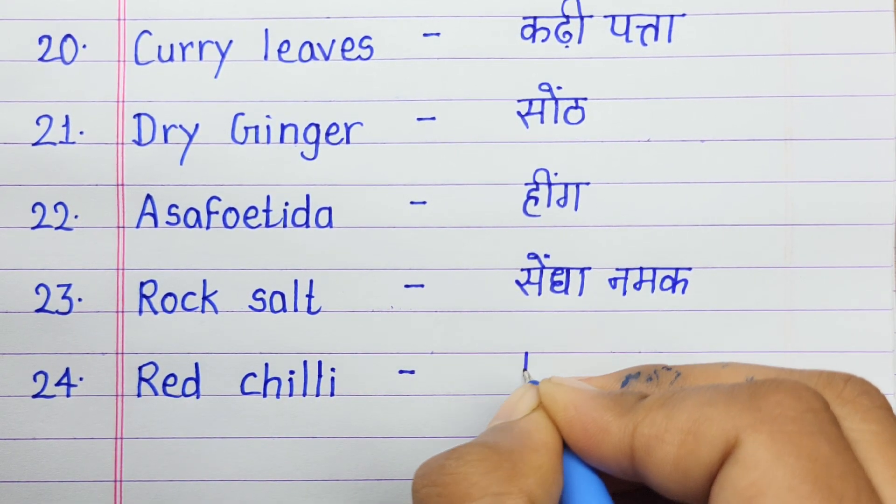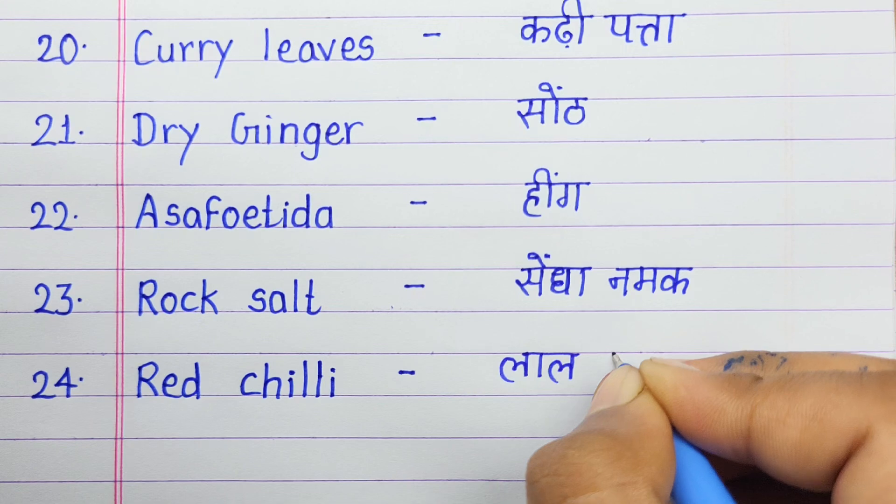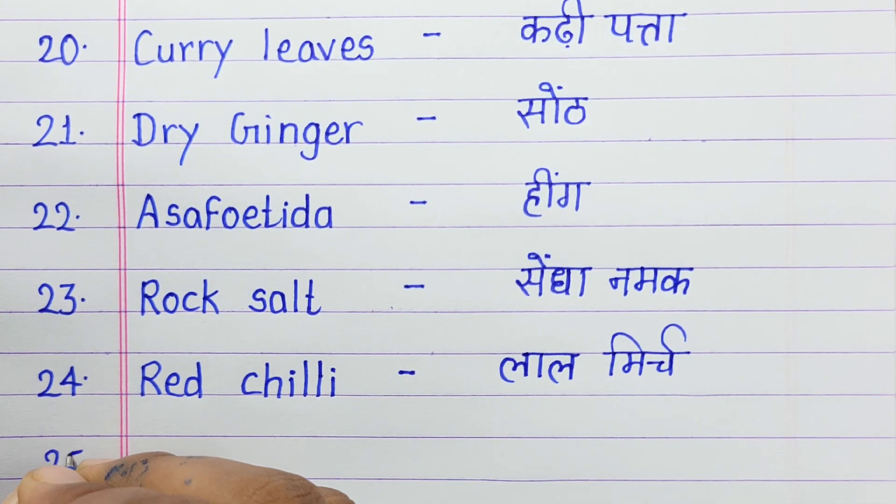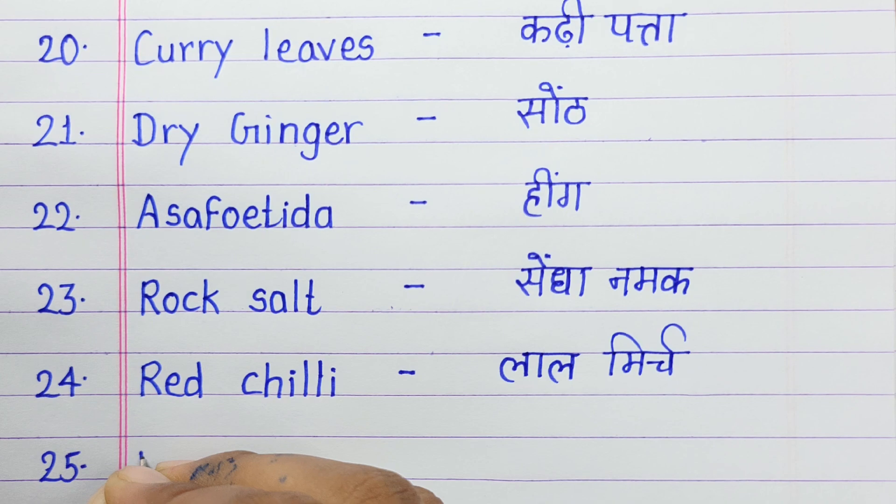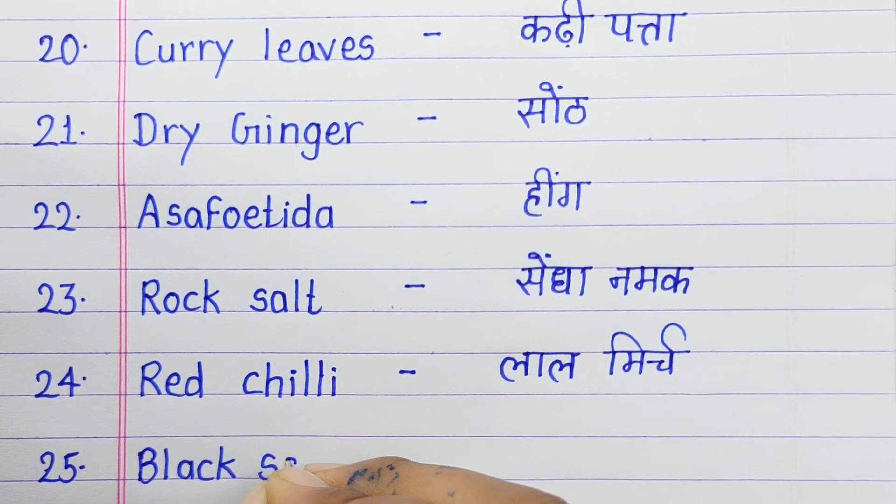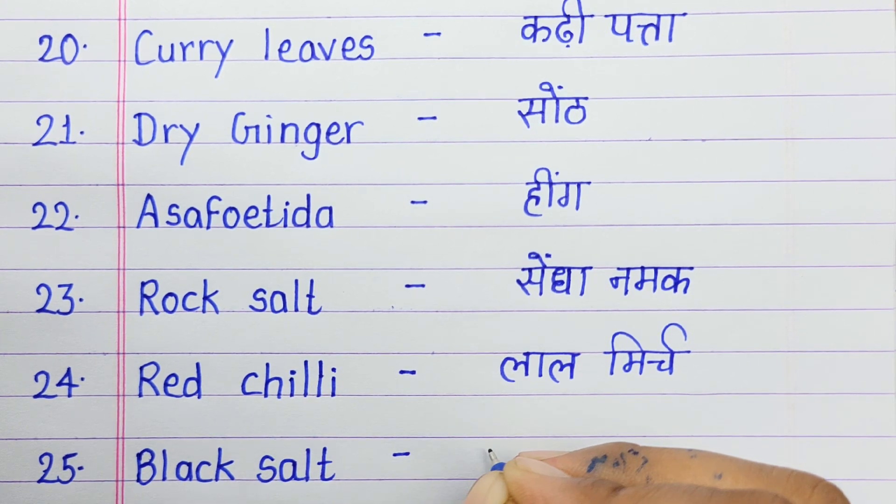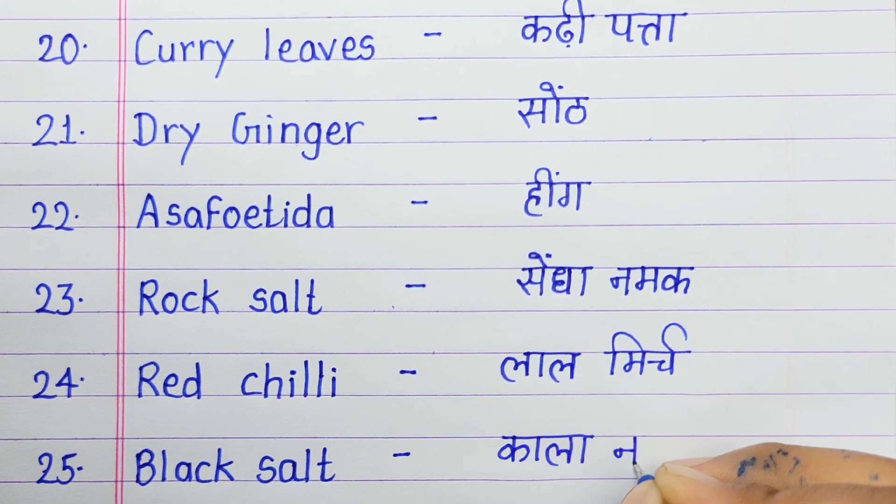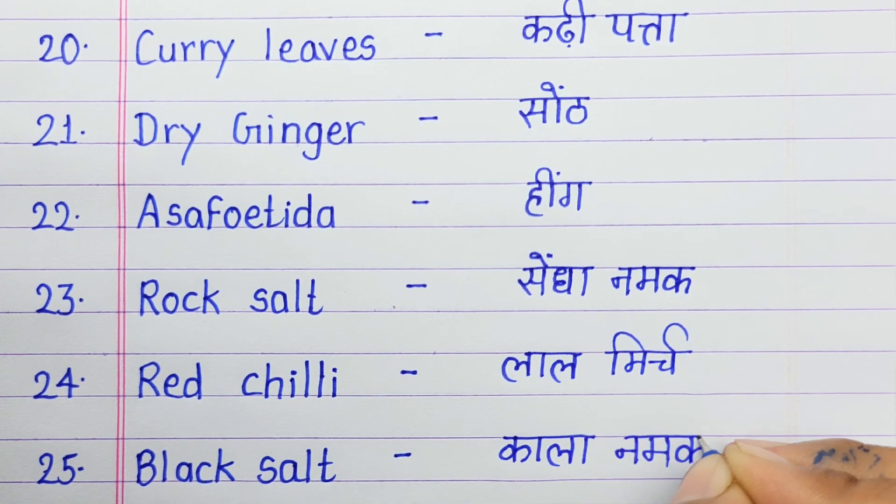Number twenty-four: Red chili means lal mirch. Number twenty-five: Black salt means kala namak.